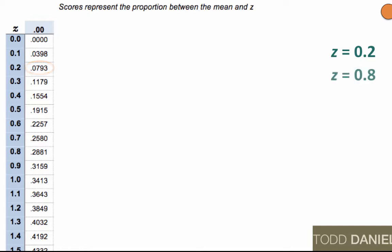What is the proportion of scores between the mean and a z of 0.8? 0.2881. What is the proportion of scores between the mean and a z of 1.2? 0.3849.